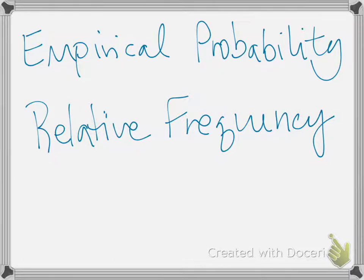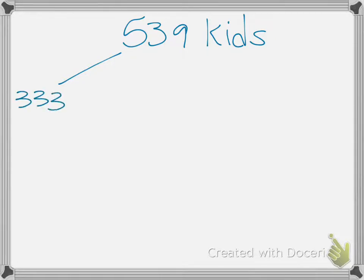And so for our question here, we have this sample of children, and there are 539 kids, and there's three possible outcomes. Their parents might still be married, and so for 333, their parents are still married.